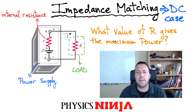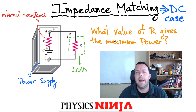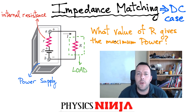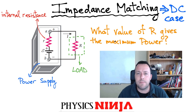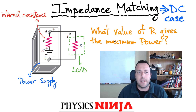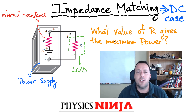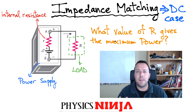Hi everybody, Physics Ninja here. Today I have a really important problem to look at and it deals with impedance matching. I'm going to deal with the simplest possible case of impedance matching — a DC case where I only have real resistors. No capacitors or inductors just yet, because you can illustrate the concept of impedance matching with this simple case.